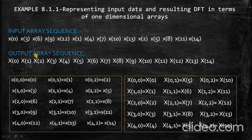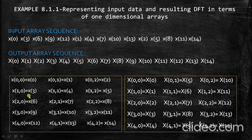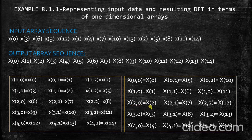Considering the output array sequence: capital X(0), X(1), X(2), X(3), and so on up to X(14). For position X(0), the input is small x(0). For capital X(1) at position row 1, column 0, the corresponding input in the two-dimensional matrix is small x(3). For position X(2,0), the output is capital X(2) and the corresponding input is small x(6). In this way the sequence mapping is determined between the input array and the output array.